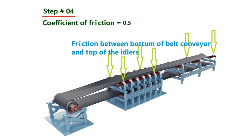In Step 4, we calculate the friction between the bottom of the belt and the top of the idlers. We need the coefficient of friction, and we will take a value of 0.5.